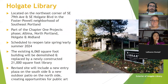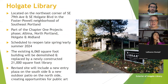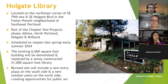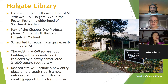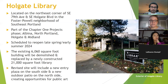Holgate Library is located at the northeast corner of SE 79th and Holgate, in the Foster-Powell neighborhood — also close to Lents, Mount Tabor, and other Southeast neighborhoods. It's part of the Chapter One project phase of the capital bond, which includes the first four libraries getting renovations: Albina, North Portland, Holgate, and Midland. Holgate is one of the first scheduled to reopen, around late spring or early summer of 2024.